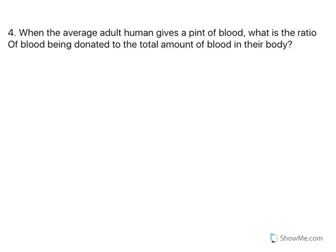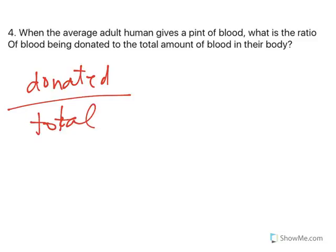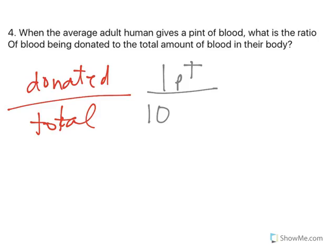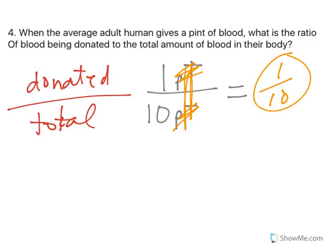Now, number four kind of builds on that. When the average adult human gives one pint of blood, because that's what they take when you give blood, what's the ratio of blood being donated? Donated to the total amount of blood in your body. Well, if you give one pint, you have, from this past question over here, you have 10 pints. That means the ratio, pints cancel out, is 1 to 10. And because the units are the same, that's why we can cancel them out.